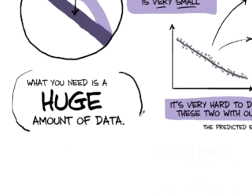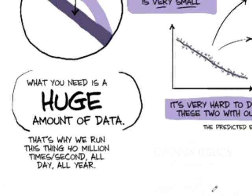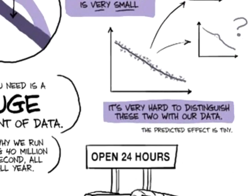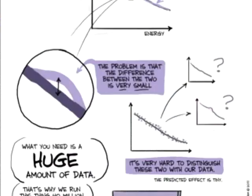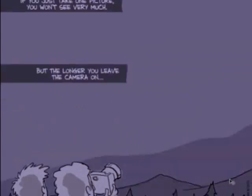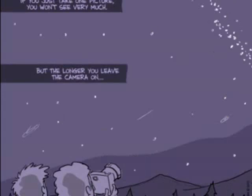What you need is a huge amount of data. You need to take a bajillion collisions before you can see the difference. That's why we run this thing 40 million times a second all day, all year, to get a lot of collisions to tell small differences between theories. It's like when you take a picture of the sky. You just take a picture, you get a little bit of light. The longer you leave the telescope looking at the sky, the more you can see farther away things.